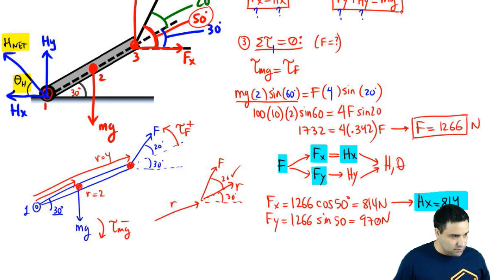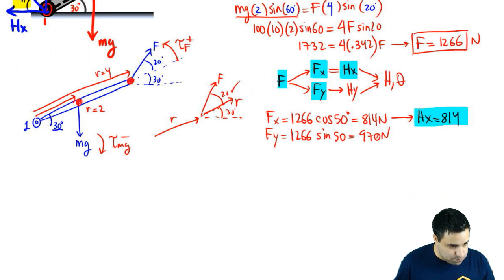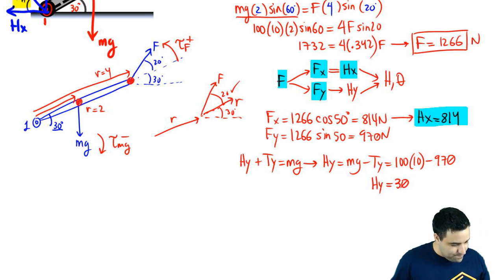So, let's keep going. Hy plus Ty equals Mg, which means Hy equals Mg minus Ty. Mg is 100 times 10 minus Ty, which is 970. This means that Hy equals 30. Hy equals 30.